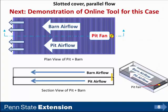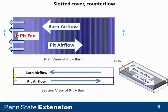Before we do the demonstration, here is counter flow: in this case the pit fan is located at the left side, the pit airflow primary direction is from left to right, and the barn airflow is from right to left. That is a counter flow situation for a tunnel ventilated barn above a slotted covered manure pit.